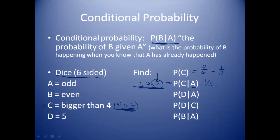Third one: the probability of D given A. What's the probability of rolling a 5 given that an odd was rolled? Since I know the die is showing an odd, it's either a 1, a 3, or a 5. And my chance of that being a 5 is 1 out of 3 again.